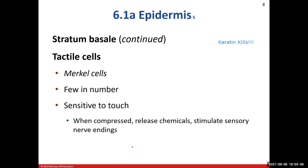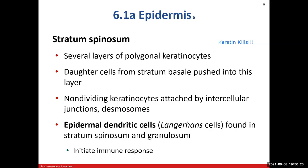The third cell type in the stratum basale are our tactile cells, also known as Merkel cells. They are touch cells — when you apply pressure to them and they get compressed, they release chemicals that stimulate sensory receptors, which generate a nerve signal to our nervous system carrying sensory information regarding touch.